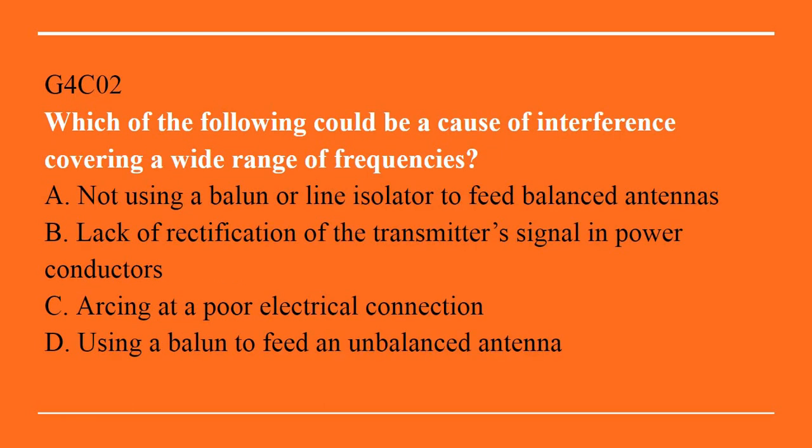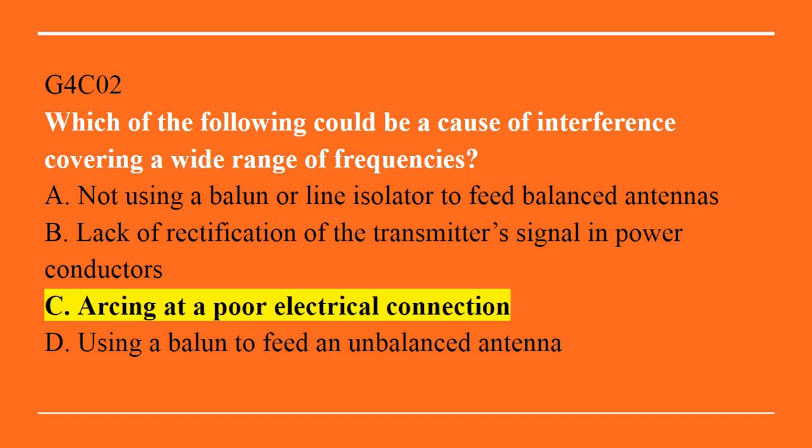G4C02: Which of the following could be a cause of interference covering a wide range of frequencies? A. Not using a balun or line isolator to feed balanced antennas. B. Lack of rectification on the transmitter's signal in power conductors. C. Arcing at a poor electrical connection. Or D. Using a balun to feed an unbalanced antenna. Answer is C. Arcing at a poor electrical connection.